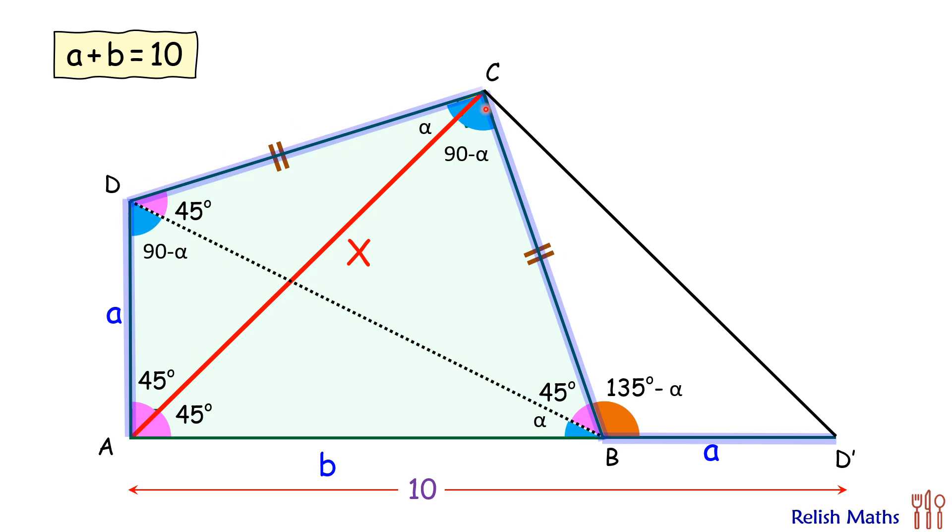And this length BC that's already given is equal to DC. So by side-angle-side, we can say that these two triangles are congruent. So triangle CDA is congruent to triangle CBD'.